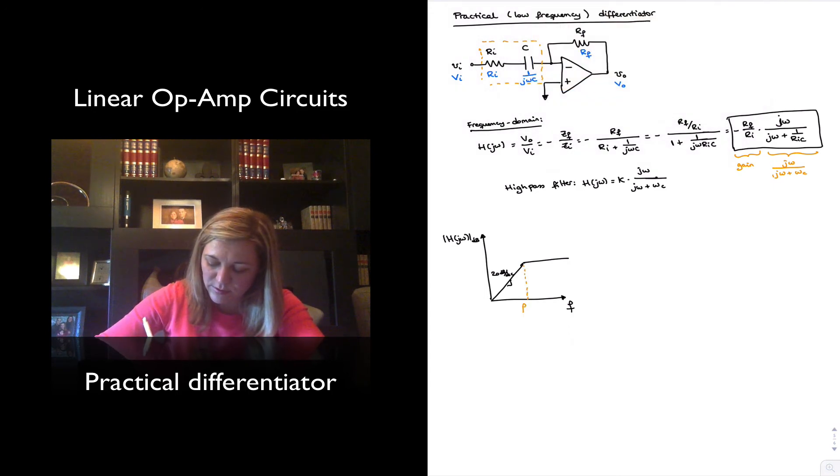This will be equal to f sub c, which in this case will be equal to 1 over 2 pi Ri times c, and this will be equal to 20 times the log base 10 of Rf over Ri.